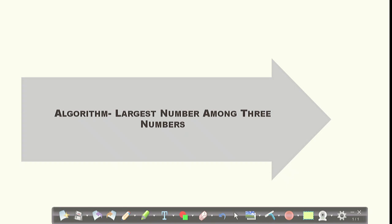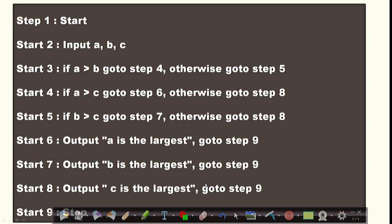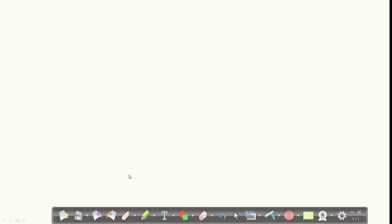Here I am giving the algorithm step by step. We will read three numbers from the user. We will check if A is greater than B, then if A is also greater than C, then we will print A is the largest number. If not, then go to step 8: C is the largest number.